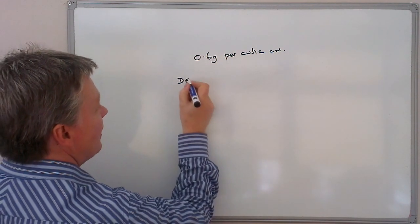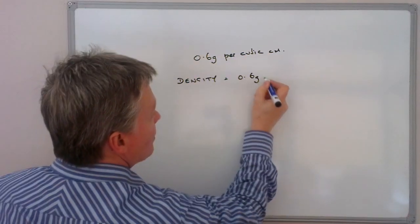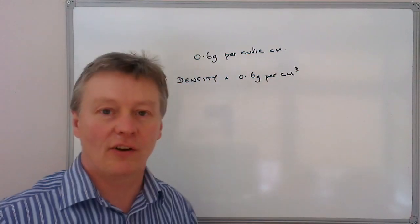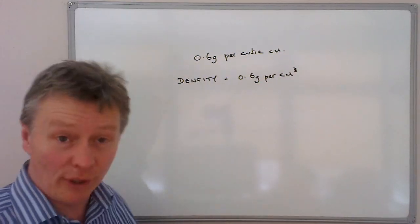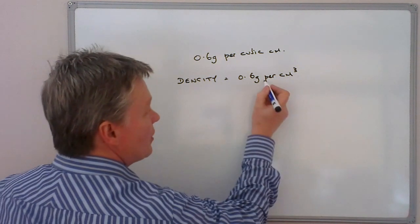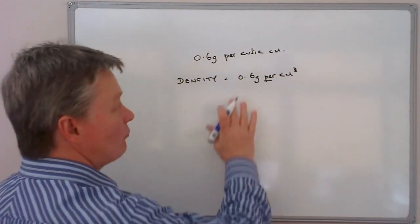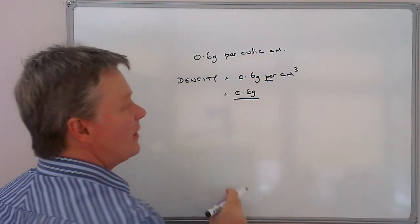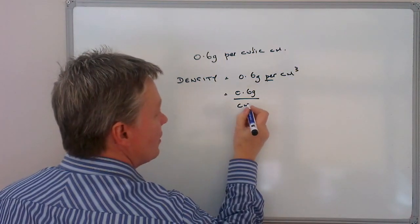So what we're saying is the density equals 0.6 grams per centimeter cubed. Okay, so I need to now just change that a little bit and that's going to allow me to create my formula. Now one of the things that you need to look at is wherever you see per in maths it usually means division. So I can rewrite that as 0.6 grams divided by centimeters cubed.